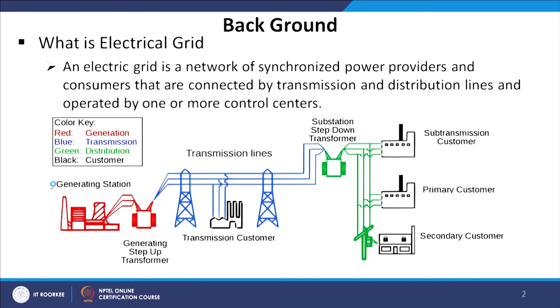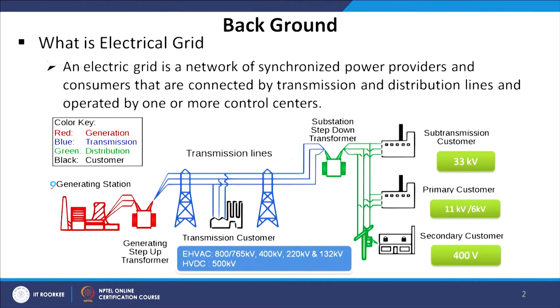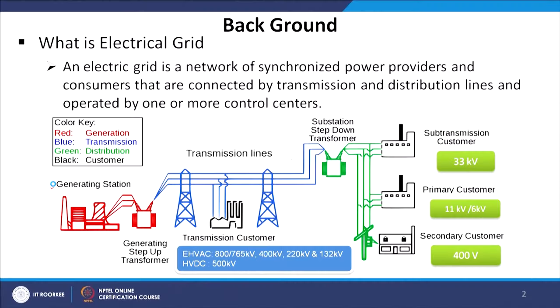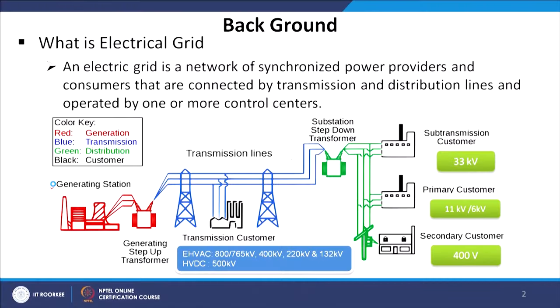The generating station ideally transfers its energy through either EHV AC lines or HV DC lines. The voltage ratings of EHV AC lines are either 800/765 kV, 400 kV, 220 kV, and 132 kV, whereas the commonly used HV DC lines are of 500 kV. The sub-transmission customers are connected at 33 kV, primary customers at 11 kV, and secondary residential customers at 400 volts.